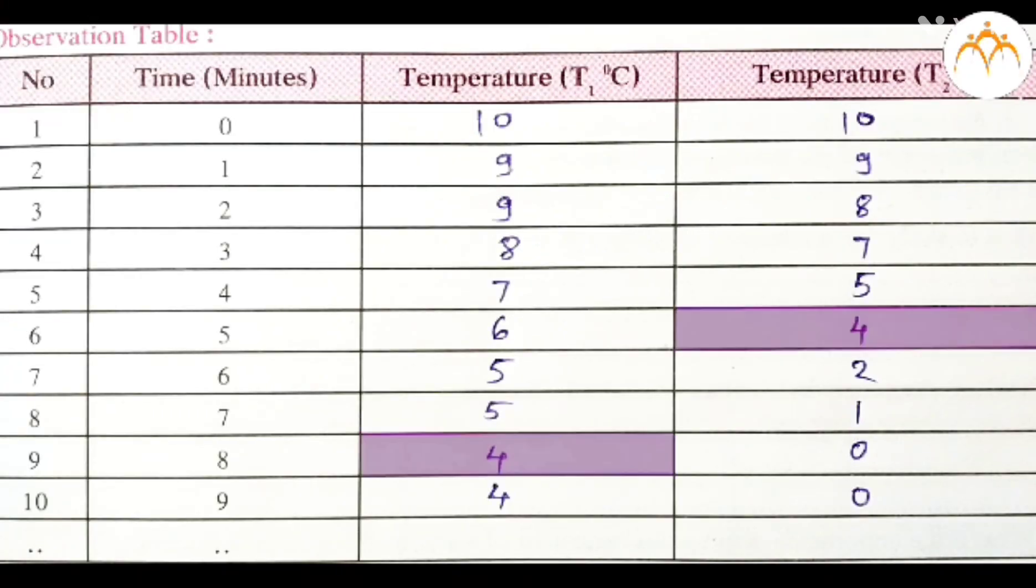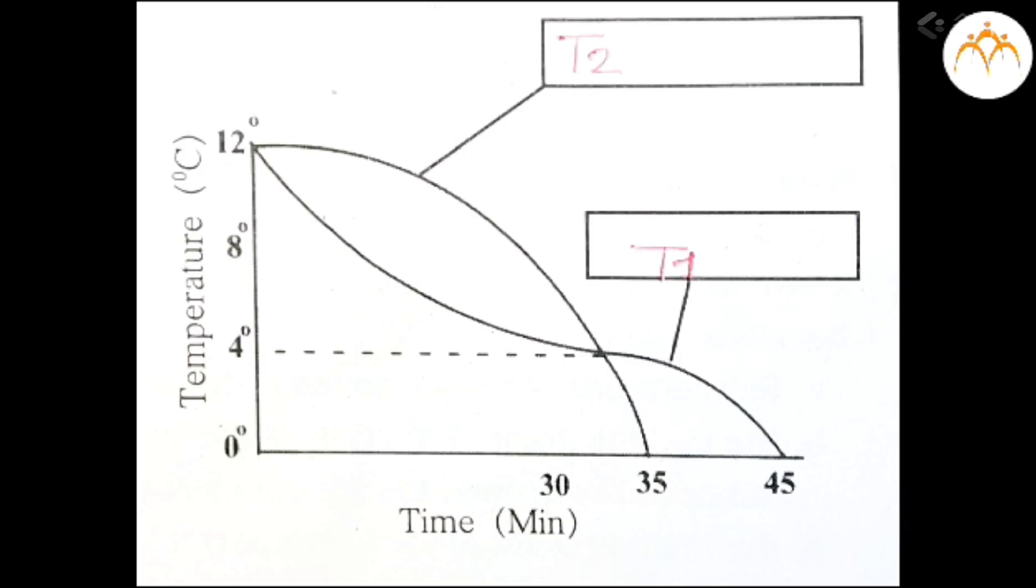When both of them go below 4 degrees Celsius, lower thermometer remains at 4 degrees. But reading in upper thermometer goes on reducing from 4, 3, 2, 1 and 0 degrees Celsius. Upper surface gets a layer of thin ice because of the anomalous behavior of water.